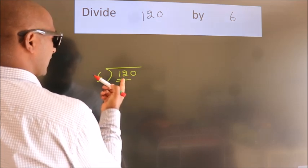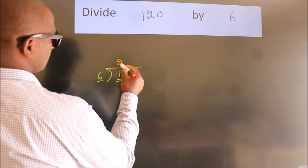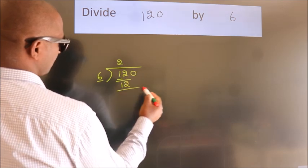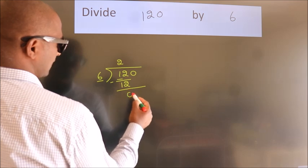In 6 table, 6 twos, 12. Now we should subtract, we get 0.